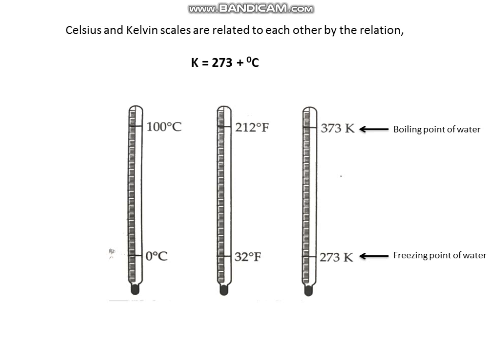Let's compare all three scales of temperature. You can see that the freezing point of water is 0 degree Celsius, 32 degree Fahrenheit, and 273 Kelvin. The boiling point of water is 100 degree Celsius, 212 degree Fahrenheit, and 373 Kelvin. These are the three scales of measuring temperature.